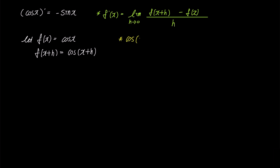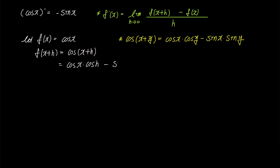We know that cosine of x plus y can be expanded as cosine x times cosine y minus sine x times sine y. Applying this formula, we can expand cosine of x plus h as cosine x times cosine h minus sine x times sine h.